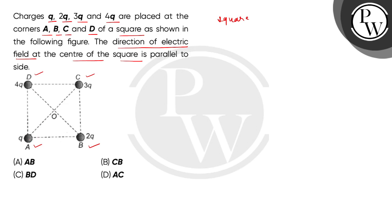Now charges Q, 2Q, 3Q and 4Q are placed respectively. Now this is a square, so each side will be the same as well as the diagonal lengths will be the same.